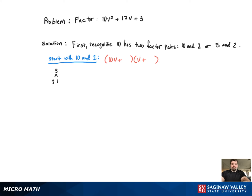So 3 has one factor pair, 3 and 1, which means we only have two options: either 10v plus 3 and v plus 1, or we can flip-flop the order. So there you have it, the two possibilities. Now what we're going to do is FOIL them out and see if one of them has 17v for the middle term.